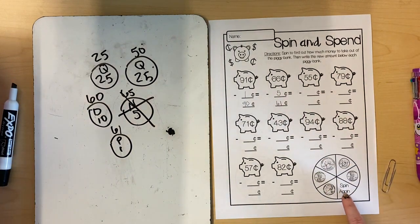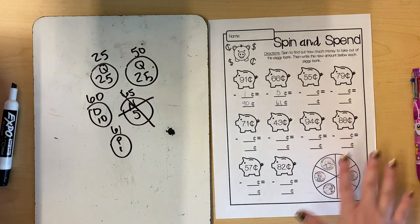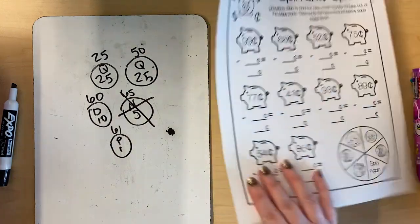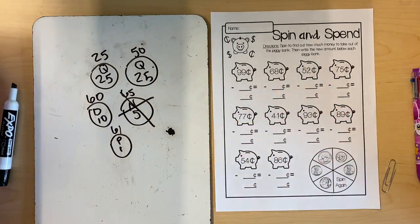If you land on this space, it means you get to spin again. Keep playing until you solve all of the subtraction problems and then you can do the other side as well. Have fun!